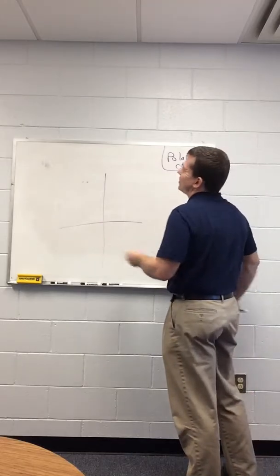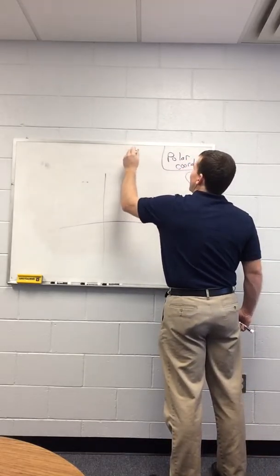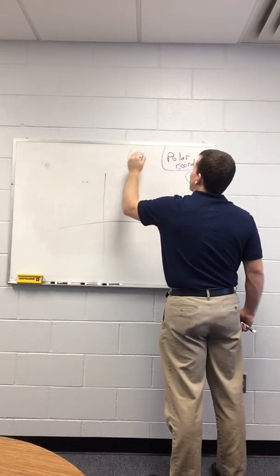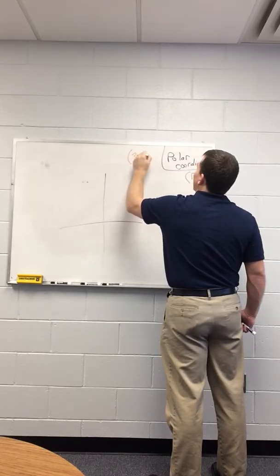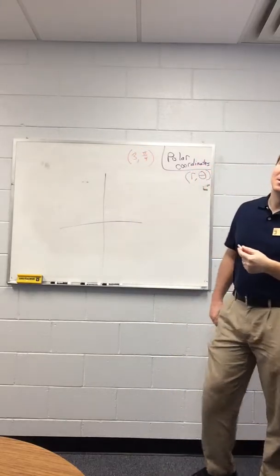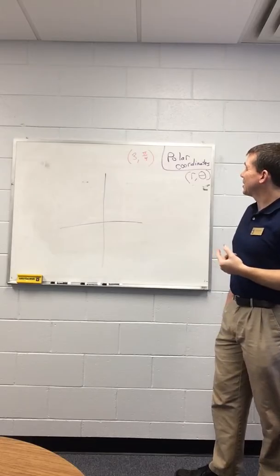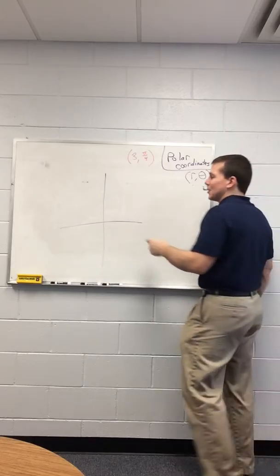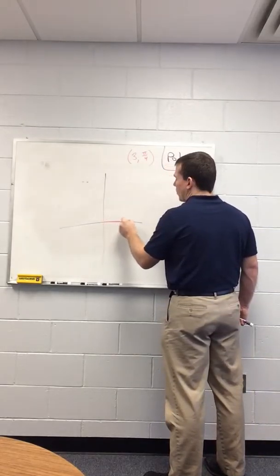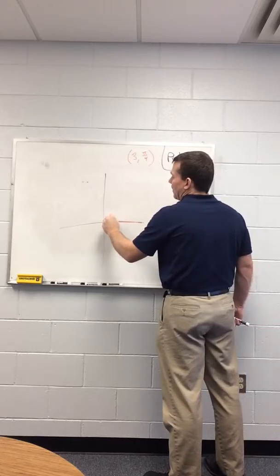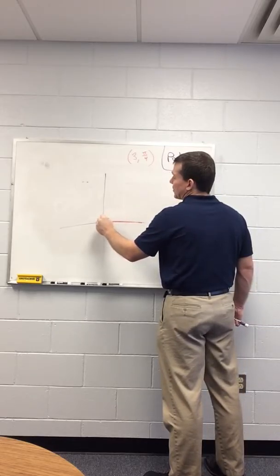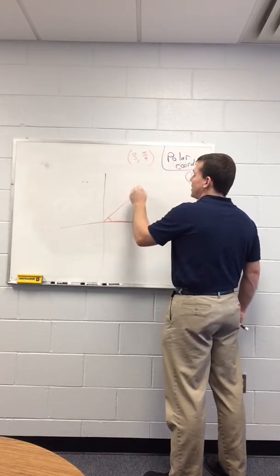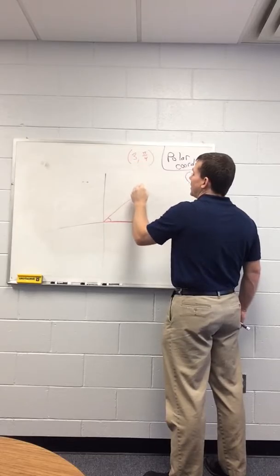So, just to mess around with these a little bit. Suppose we have the point 3, pi over 4. What that means is, my radius is 3, my angle is pi over 4, so find my angle, our angles come from the horizontal, just like always. Find the angle pi over 4, which you guys know is 45 degrees, and then go with distance 3, to right there. And there's my point.